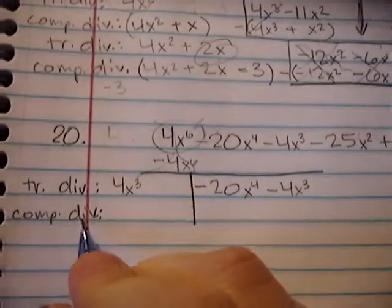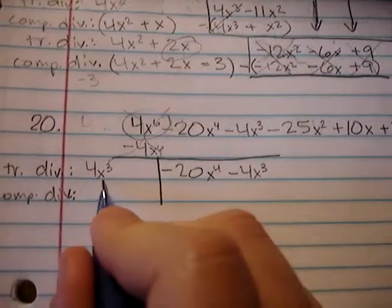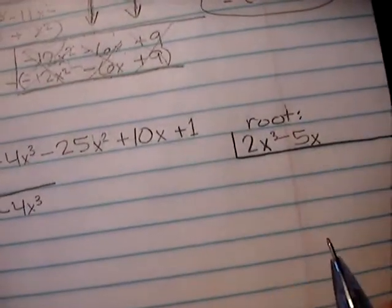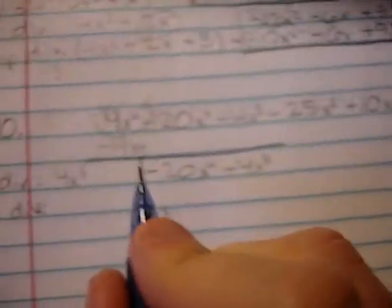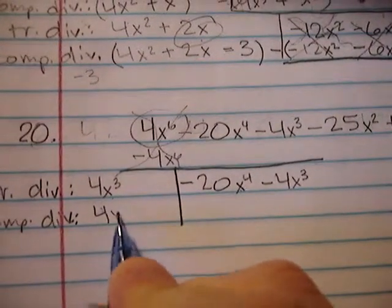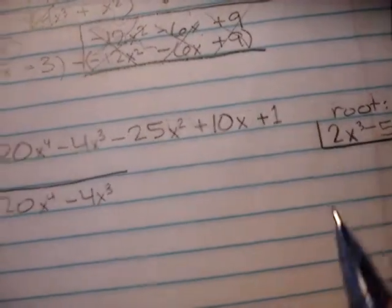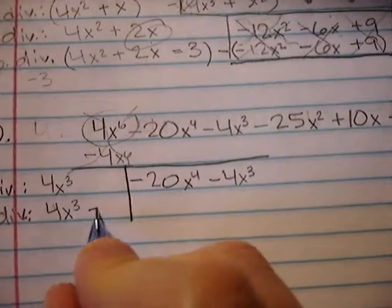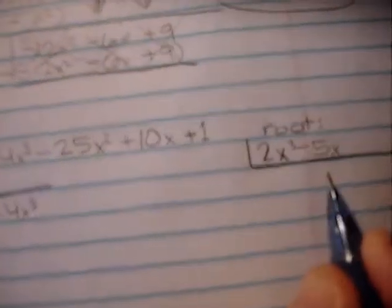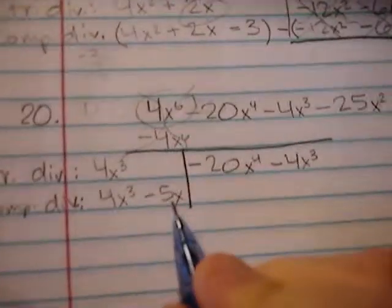Now we go and look at our complete divisor. It's going to be the trial divisor plus the latest root. So 4x cubed. That's what we call twice the first root. 4x cubed minus 5x. Okay, and that's our complete divisor.